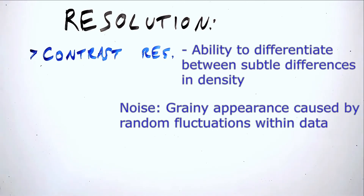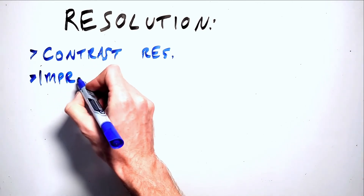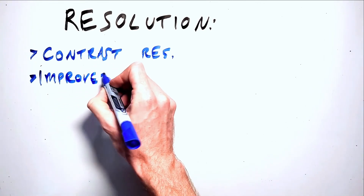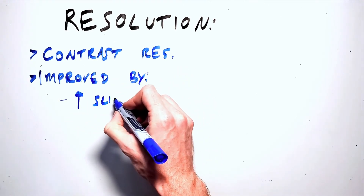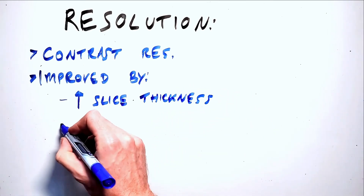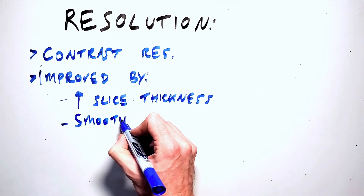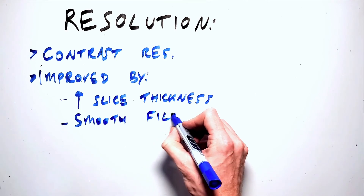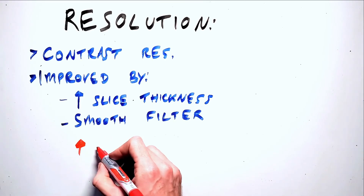This puts us at a trade-off between spatial and contrast resolution, because some of the techniques to optimize spatial resolution will create more noise and will thus detract from contrast resolution. To improve contrast resolution by decreasing noise level, we want to use thicker slices so we're building the image from a larger slab of data, and we want to use a smooth filter to blur out that noise. These two things will make a smoother image with less noise, but also an image with less spatial resolution.